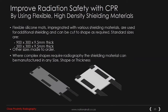Staying on the theme of radiation safety, we achieve this by using flexible, high-density shielding materials. Flexible silicone mats impregnated with various shielding materials are used for additional shielding and can be cut to shape as required. Standard shapes are 900×300×9.5 mm thick and 300×300×9.5 mm thick. Other sizes are available to order per client requirements. Where complex shapes are required, the shielding material can be manufactured to any custom size, shape, or thickness.